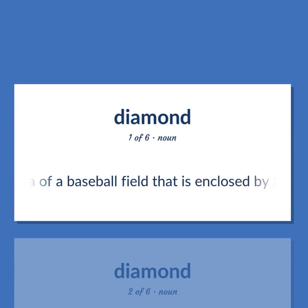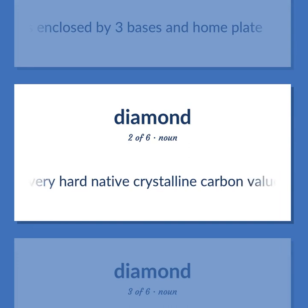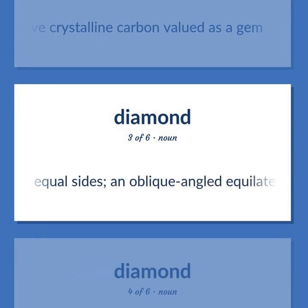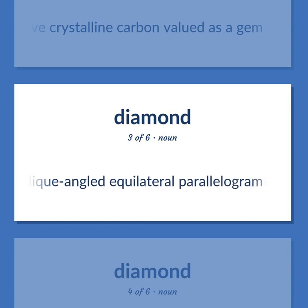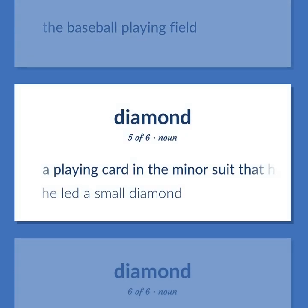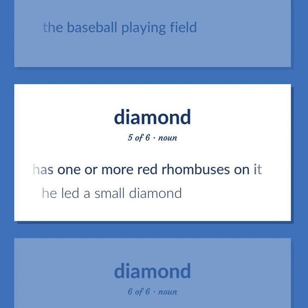Diamond. The area of a baseball field that is enclosed by three bases and home plate. A very hard native crystalline carbon valued as a gem. A parallelogram with four equal sides, an oblique angled equilateral parallelogram. The baseball playing field. A playing card in the minor suit that has one or more red rhombuses on it. He led a small diamond.